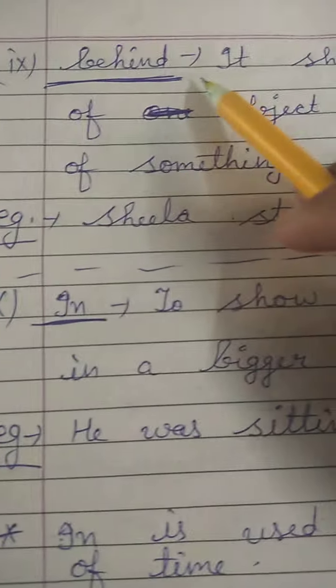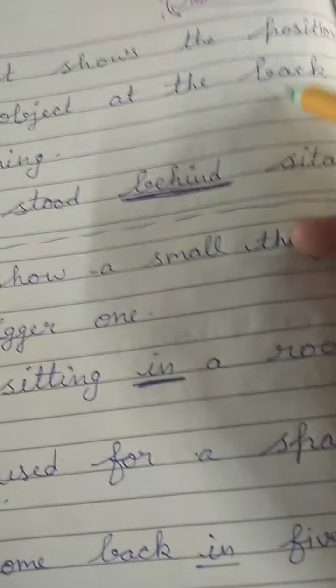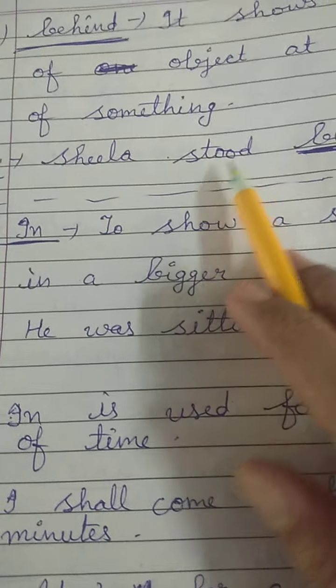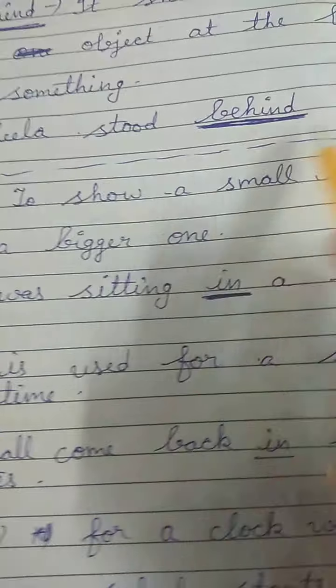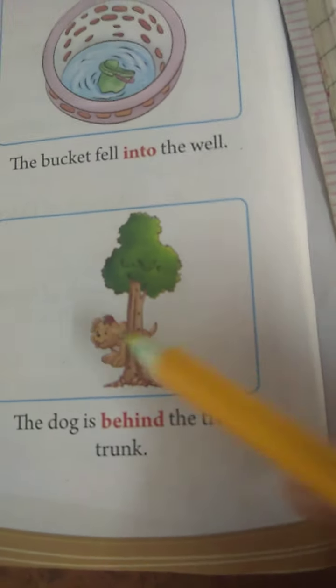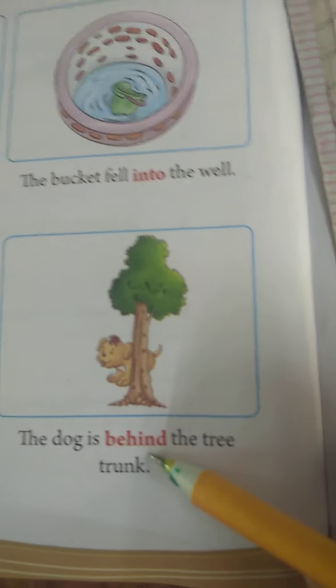Next is 'behind'. It shows the position of an object at the back of something. For example: Sheila stood behind Sita — Sheila is standing at the back of Sita. The dog is behind the tree — he is standing at the back of the tree, so we use 'behind'.